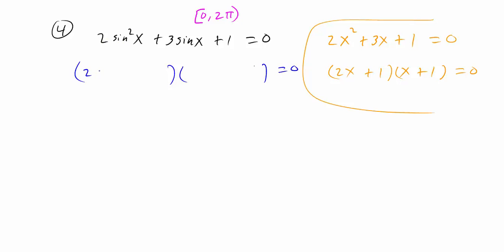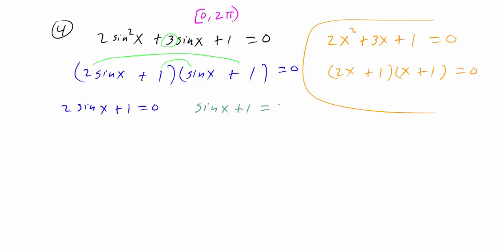To get two sine squared, we use two sine x multiplied by sine of x. To get the one, that would be plus one and plus one. The three sine x in the middle comes from one sine x plus two sine x. So we have two factors: two sine x plus one, and sine x plus one. Setting two sine x plus one equal to zero: two sine x equals negative one, divide by two, giving sine x equals negative one-half. Setting sine x plus one equal to zero gives sine x equals negative one.